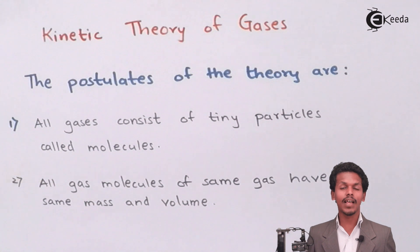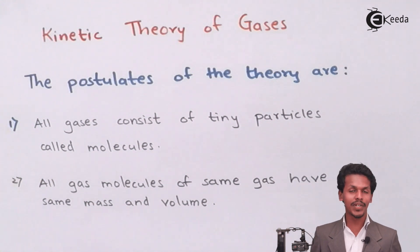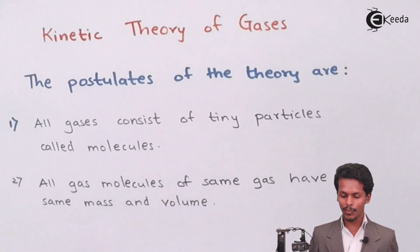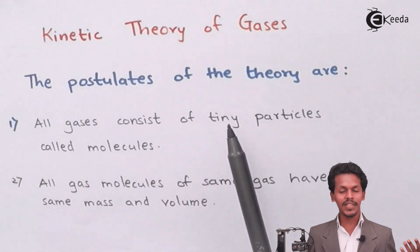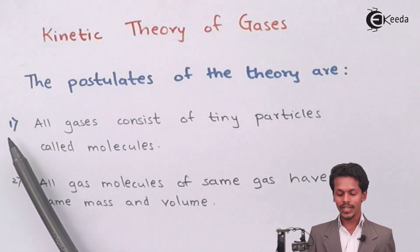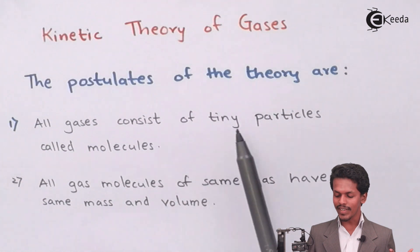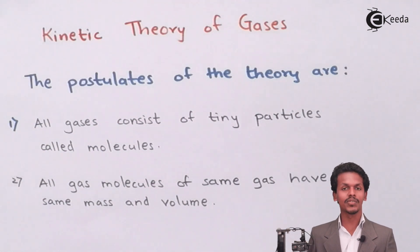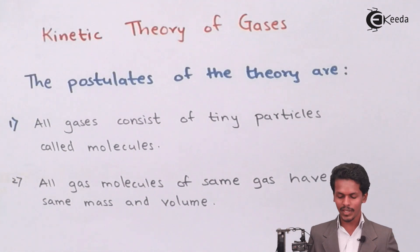The kinetic theory of gases is basically based on certain postulates. The first postulate is that all gases consist of tiny particles known as molecules. All the tiny particles of a gaseous substance are said to be molecules.